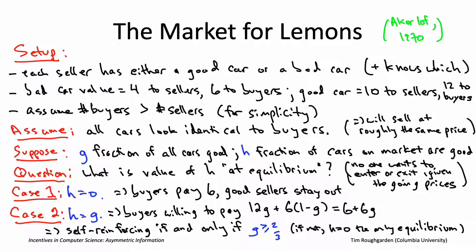In the less happy case where G is less than two-thirds, the going price is too low to keep good-car owners in the market, and they exit — leaving H equals zero as the only equilibrium. This constitutes a market failure in the sense that the outcome is not Pareto optimal: you could do something different that would make everybody happier. Specifically, if the good cars that went unsold were transferred to buyers with eleven units of money going to the sellers, both parties would be better off than under the market outcome.